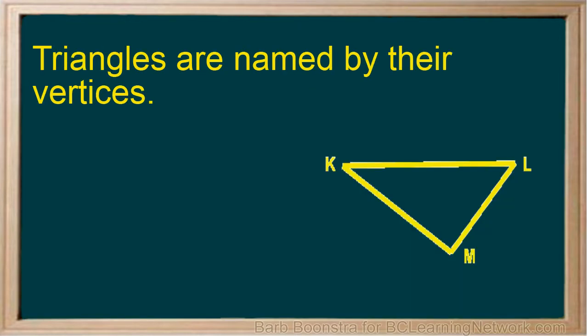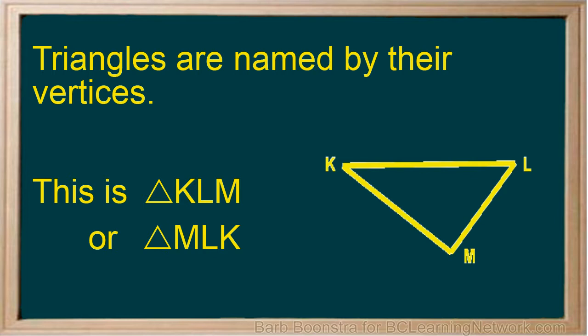Triangles are named by their vertices. This triangle is triangle KLM, or triangle MLK, or triangle LMK.